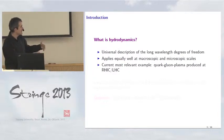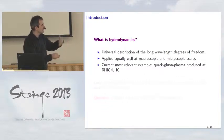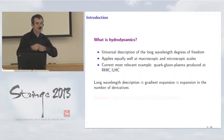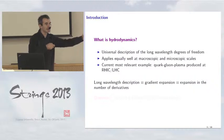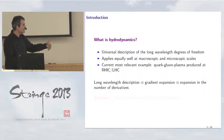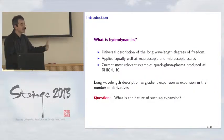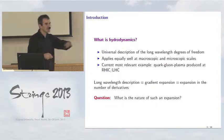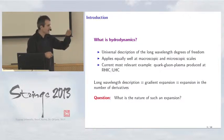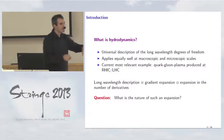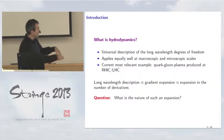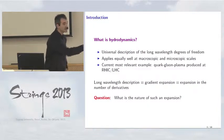Since we are looking at a long-wavelength description, this is equivalent to a gradient expansion — an expansion in the number of derivatives. We are dealing with a certain effective perturbative expansion, not in a coupling constant, but in the number of derivatives. The question we wanted to ask is: what is the nature of such an expansion? We know a lot about perturbative expansions in coupling constants — convergence, asymptotic behavior, Borel summability, and singularities. We would like to ask similar questions for this long-wavelength derivative expansion.